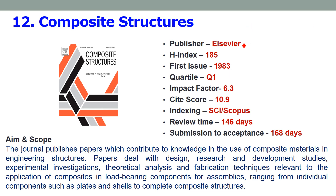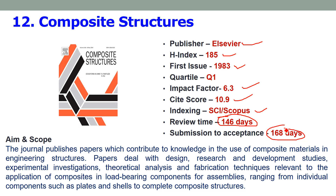Twelfth is Composite Structures, published by Elsevier with an H-index of 185. The first issue was published in 1983. It is a Quartile 1 journal with an impact factor of 6.3 and a site score of 10.9. Indexing is SCI. Submission to acceptance is 168 days — within 6 months your paper will get published. You can submit research related to composite structure analysis and design, including static analysis such as bending, buckling, and vibration analysis of composite structural elements like beams, columns, plates, and shells.